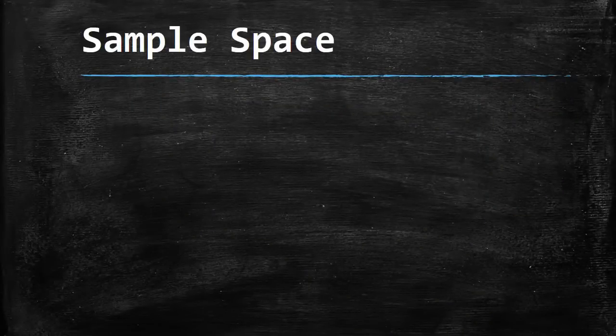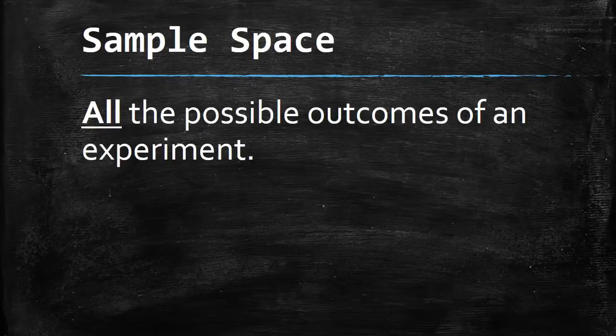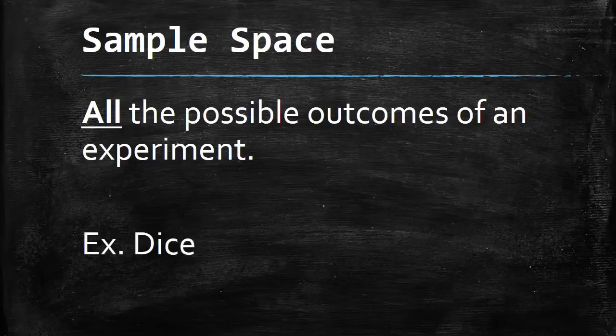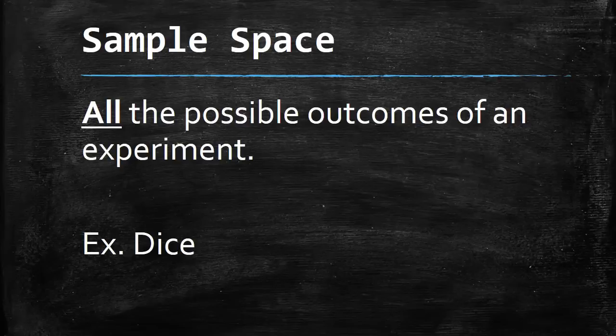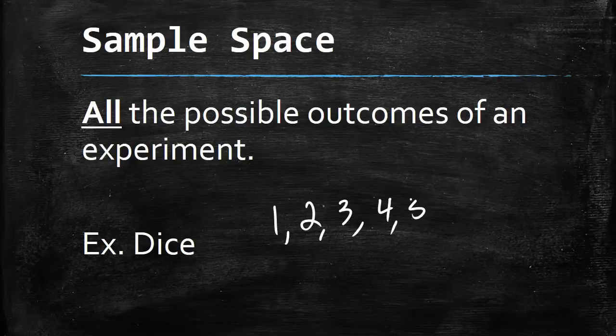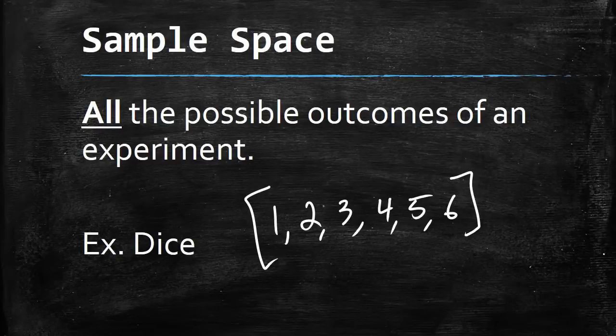We also have what's called the sample space. This is important because it tells us how many outcomes are possible from an experiment. Sample space is just all the possible outcomes of an experiment. If we look at a die, you could roll a one, two, three, four, five, or six. This is called your sample space.